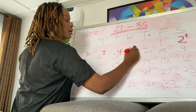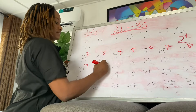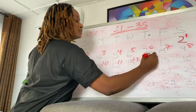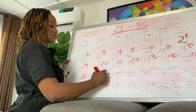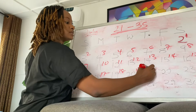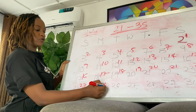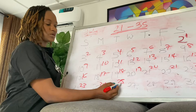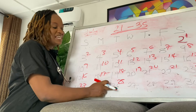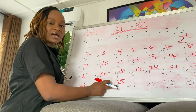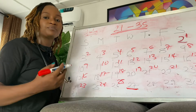Counting 25 days from the 2nd of July brings us to the 26th of July. But that 25th day is the last day of your cycle — it is not the next time you will see your period. It is the day after that 25th day that you will be expecting to see your period.